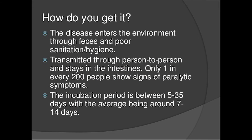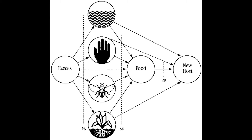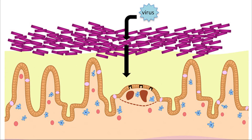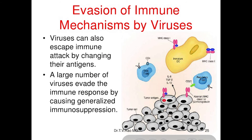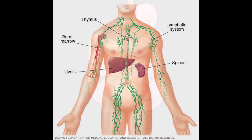The poliovirus is transmitted through the fecal-oral route, or less frequently by a common vehicle — mainly contaminated water or food. Once the virus enters the intestines at the end of the gastrointestinal tract, it begins to multiply. Poliovirus uses two key mechanisms to evade the immune system. First, it is capable of surviving the highly acidic conditions of the gastrointestinal tract — your stomach and intestines — allowing the virus to infect the host.